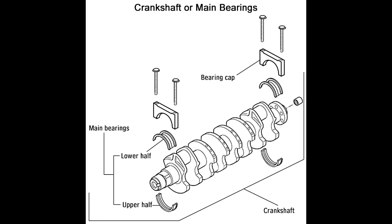Number of bearings. Since each piston has one rod bearing, the total number of bearings in an engine depends on the number of cylinders. In case of main bearings, most small engines have two bearings, one at each end of the crankshaft, while others have more, one between two adjacent crankpins. Increasing the number of main bearings on a crankshaft helps it handle the flexing effect of the connecting rods better and contributes to engine stability. However, additional main bearings need a longer crankshaft, which increases its inertia.